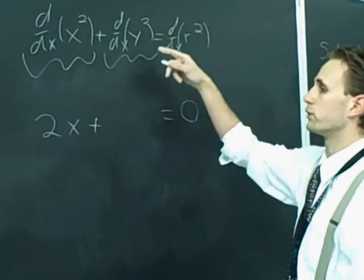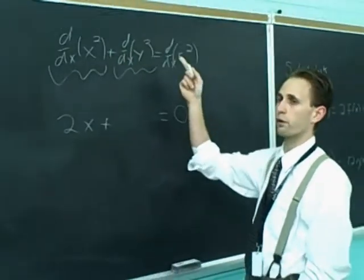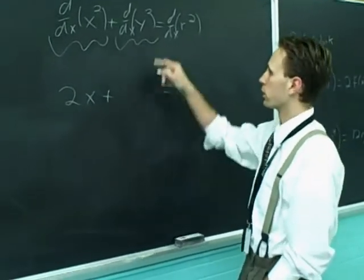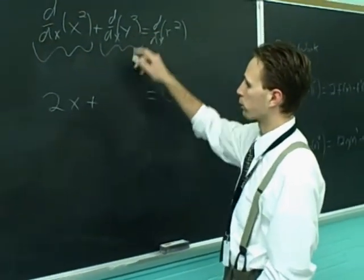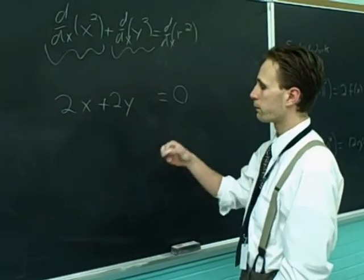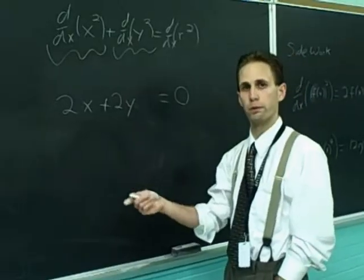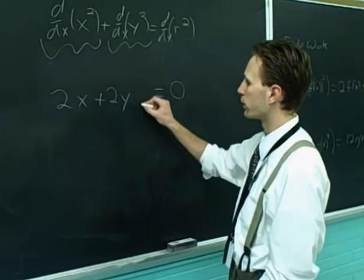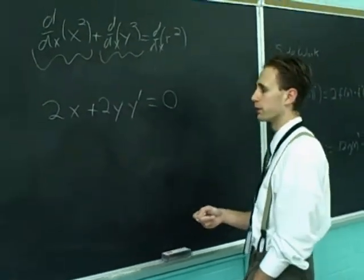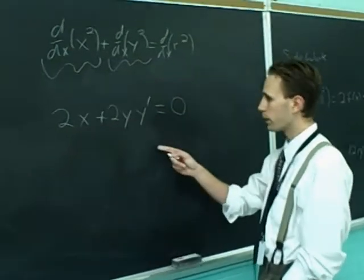There are two functions here. The outer function is the squaring function. The inner function is y. So you differentiate the outer function. We write that as 2y, just doing the power rule. By the chain rule, you multiply that by the derivative of the inside function, which we symbolize as y prime or dy dx if you so desire.